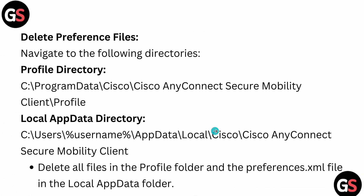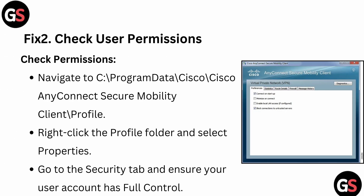You can delete the preference files. Check the path shown — most of the time this path is the same on many devices. Delete all the files in your profile folder, and then the preference XML file in your Local App Data folder.